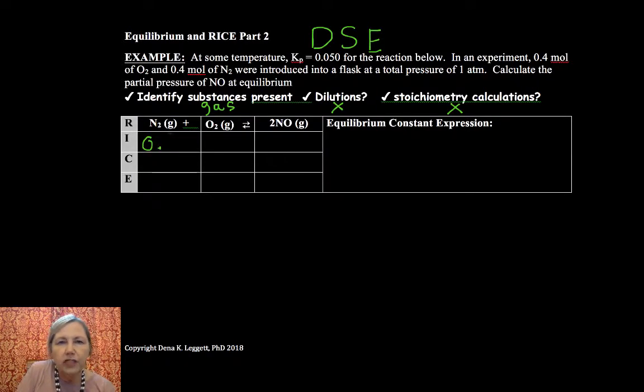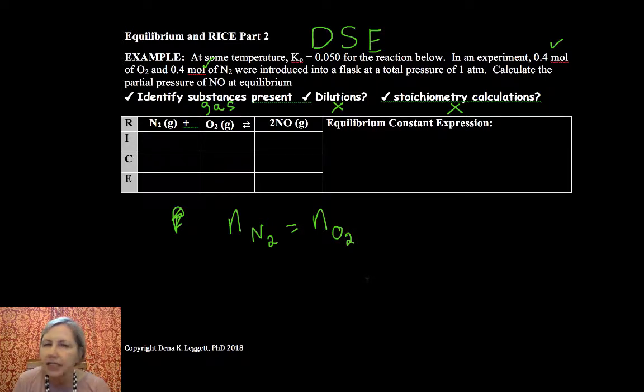So the question tells me I have 0.4 moles and 0.4 moles. So I have equal moles of nitrogen and oxygen present. In a gaseous system, those are the only things present. I don't have NO. That means that their partial pressures will be equal. Their volumes are equal. Their temperatures are equal. Their moles are equal. Therefore, their partial pressures must be equal.